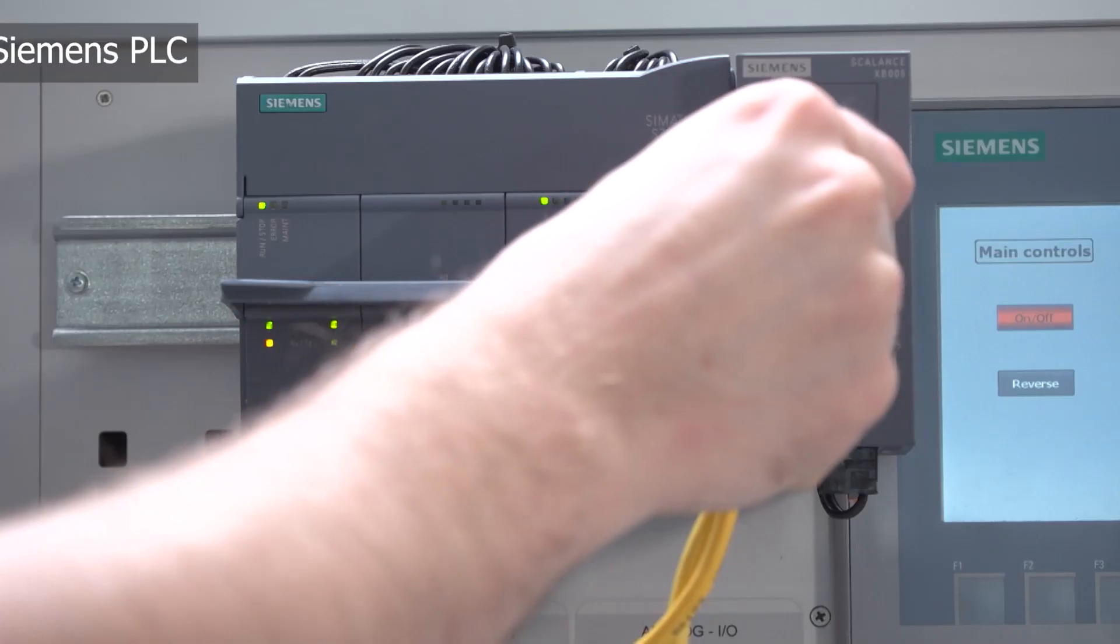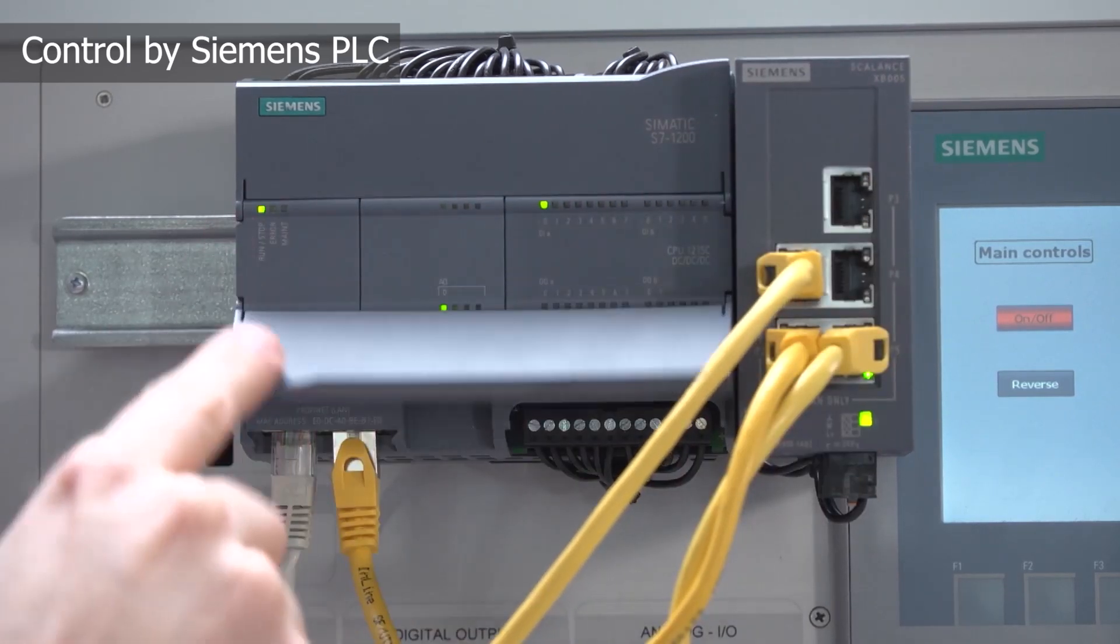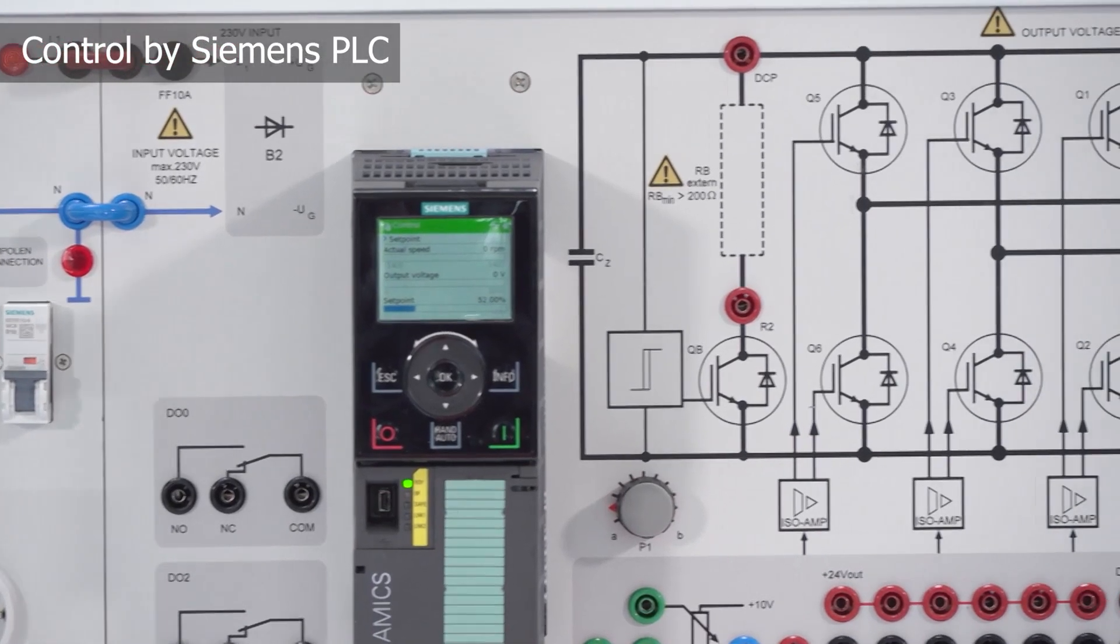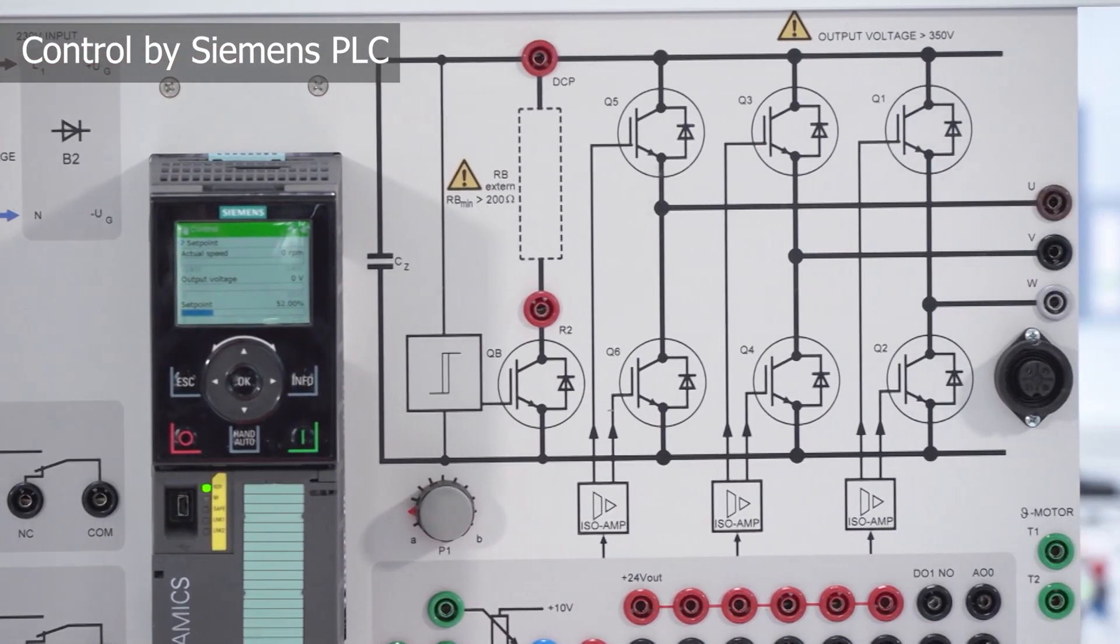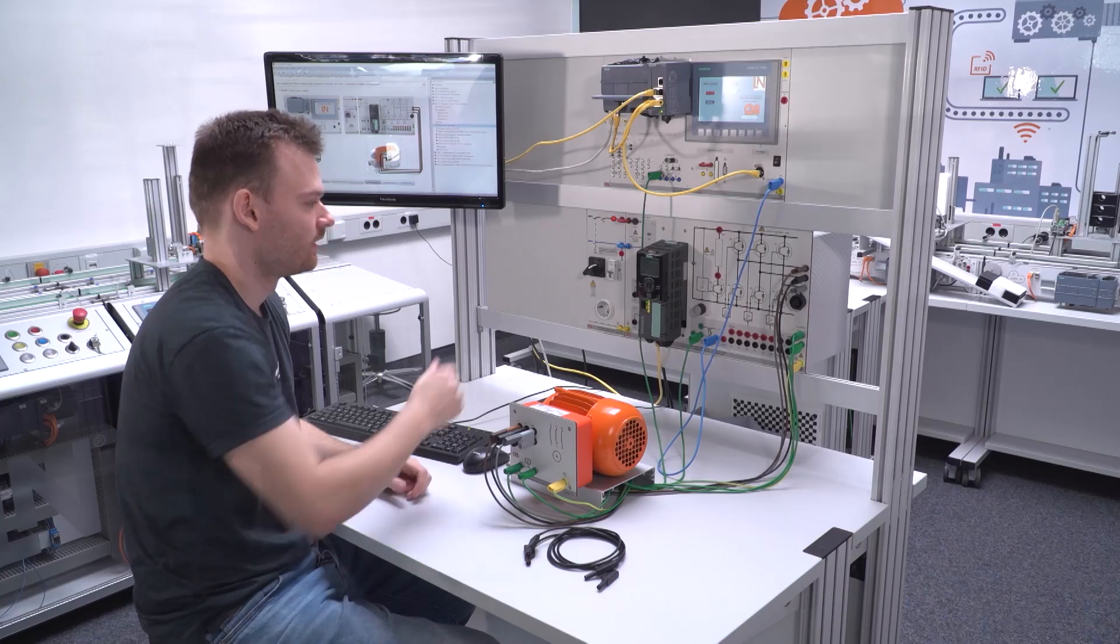The process control is performed by a Siemens PLC. The digital inputs and outputs can be tapped externally via safety measurement leads or D-sub connector plugs and are thus easily accessible.